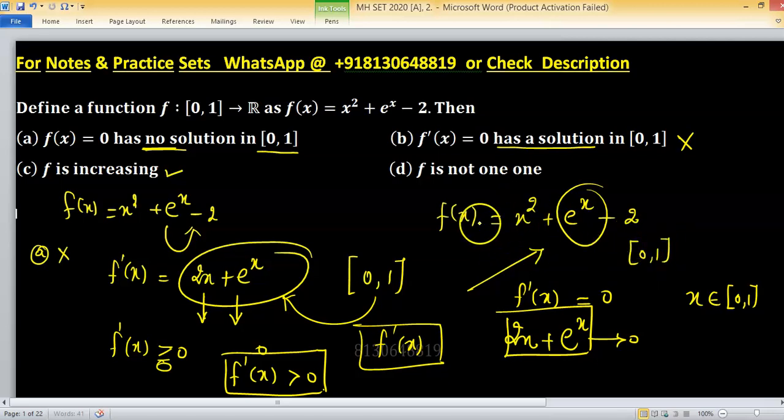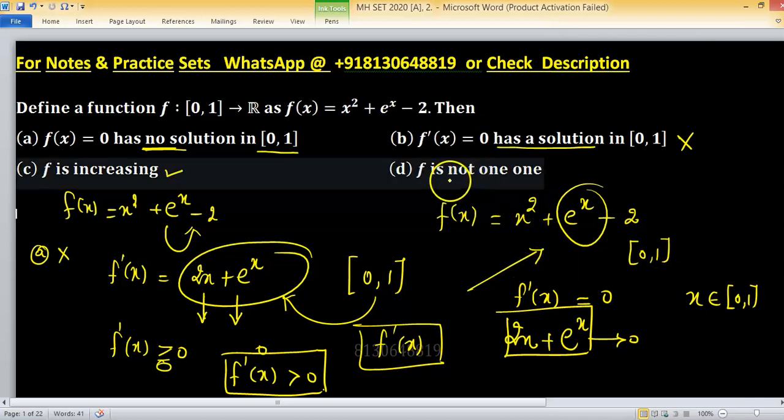this function gives you different values. That's why this function is one-to-one but it says not one-to-one, that's why this is wrong. So the key to this problem is option (c).